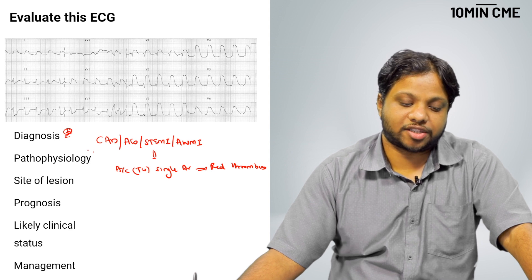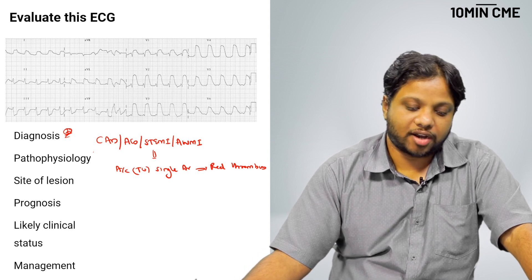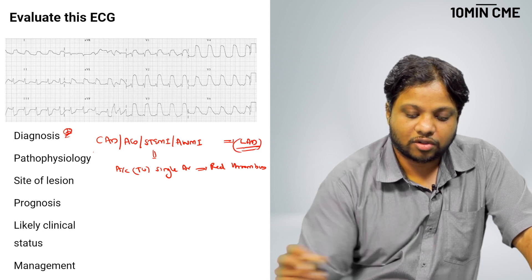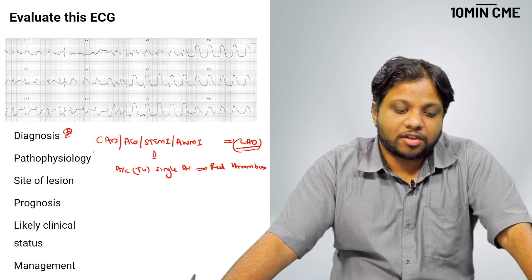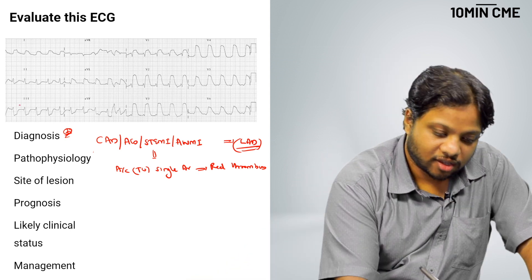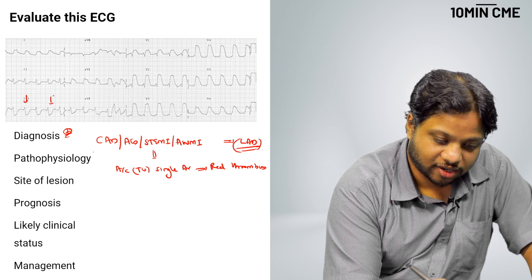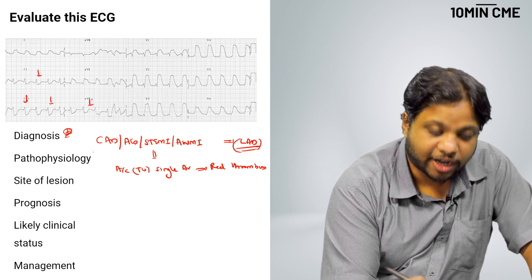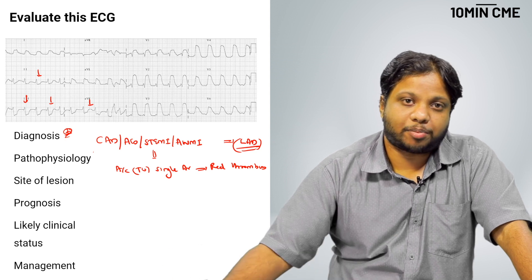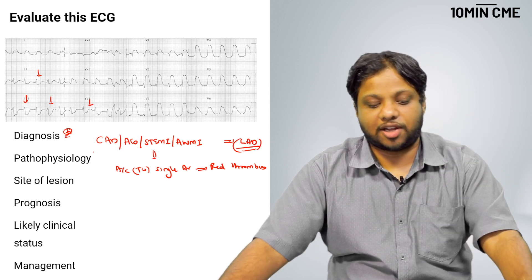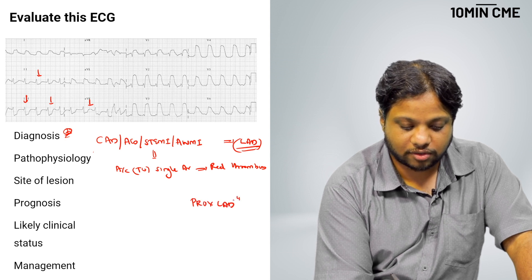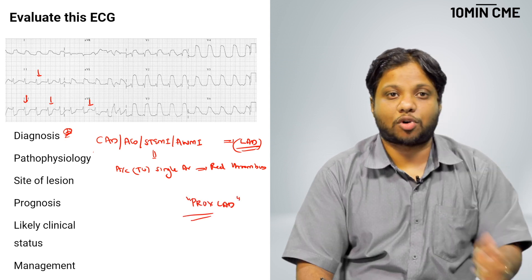Now, we come to the site of lesion. Since it is an anterolateral MI, only one possible artery can get occluded. It is the left anterior descending or the LAD. Where in the LAD? Whenever you get ST elevation in the anterior leads, you look at the inferior leads. If you see ST depression in the inferior leads, it might only be around 0.5 mm. It is obviously more here. When you see ST depression in the inferior leads, you localize it to the proximal LAD. This is a proximal LAD occlusion. Site of lesion is proximal LAD.